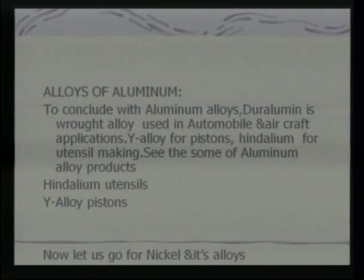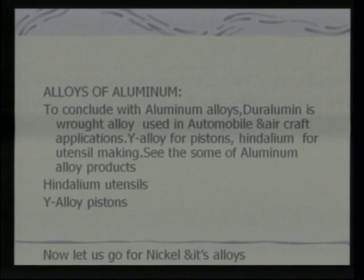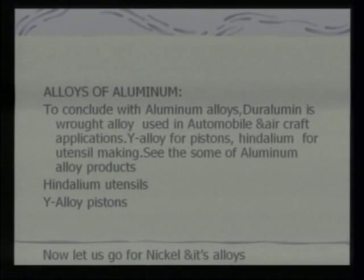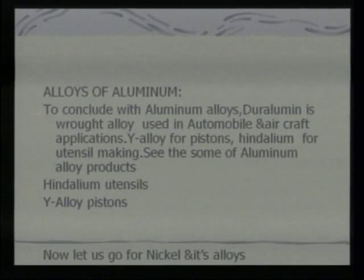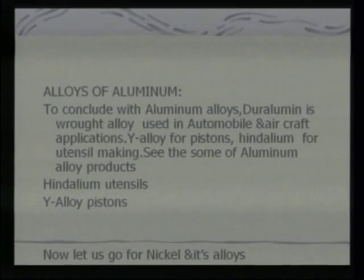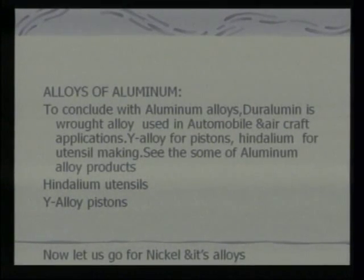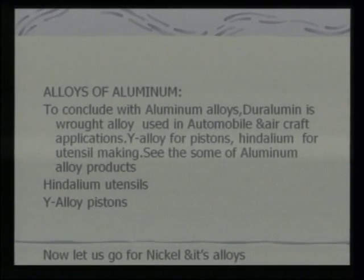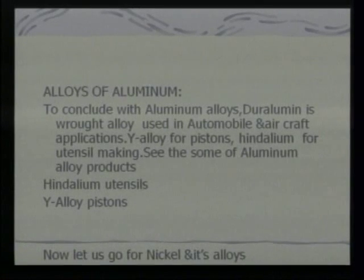Y alloy contains copper 3.5 to 4.5 percent, nickel 1.8 to 2.3 percent, magnesium 1.2 to 1.7 percent, and the remaining is aluminum. It retains high strength at high temperature and has resistance to corrosion; it is used for pistons and cylinder heads of aircraft engines. Magnolium contains magnesium 2 to 10 percent, copper 1.75 percent, and remaining aluminum — it is light in weight, possesses good mechanical properties, and is useful for aircraft and automobile components.